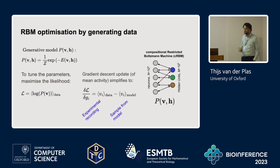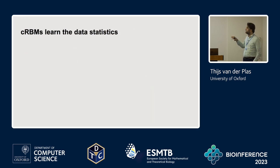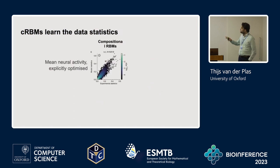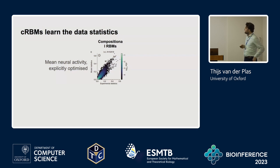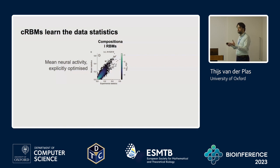We let this model learn — it takes about half a day — and then it converges to learn the data statistics. Here I'm showing the mean activity of neurons: on the x-axis the mean activity of the recorded data, and on the y-axis the mean activity of samples from the model after convergence. This is a density map of about 50,000 neurons in one fish, and they are very strongly correlated, meaning the model has indeed converged — which makes sense because we asked the model to learn exactly this.